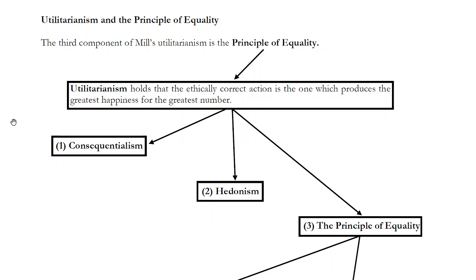The reason hedonism matters for a utilitarian is: if what determines the rightness or wrongness of my actions is the consequences, now I know what makes a consequence good. A good consequence is one that produces pleasure and happiness. A bad consequence is one that produces pain.